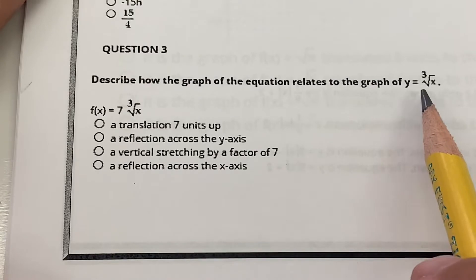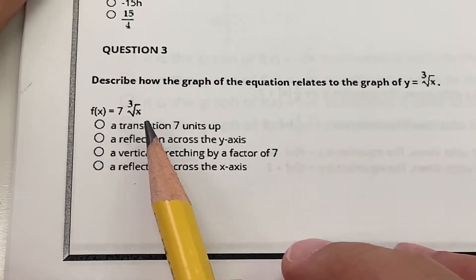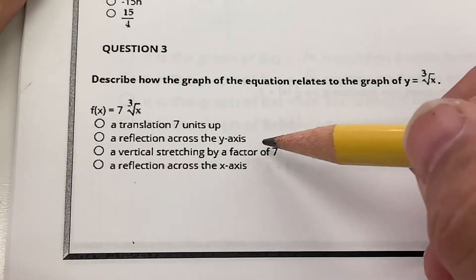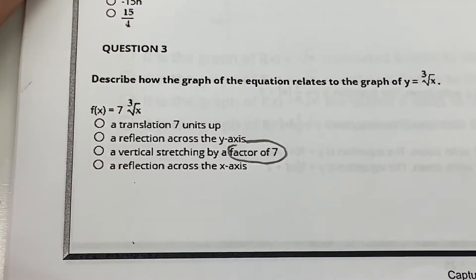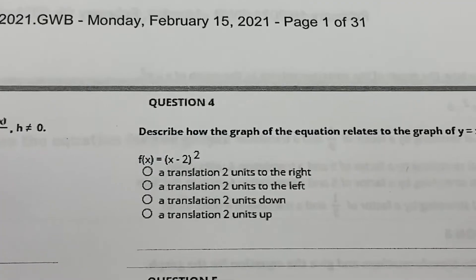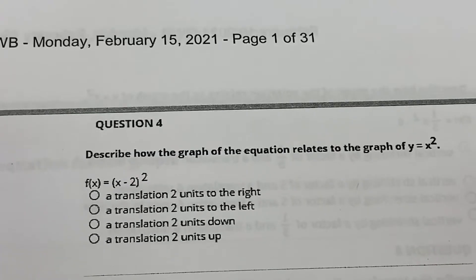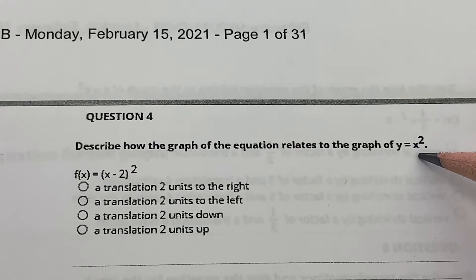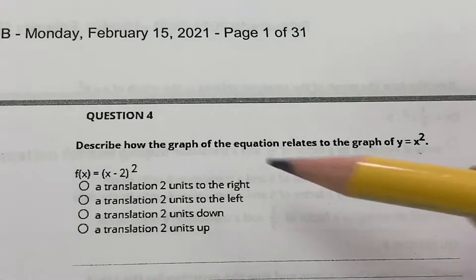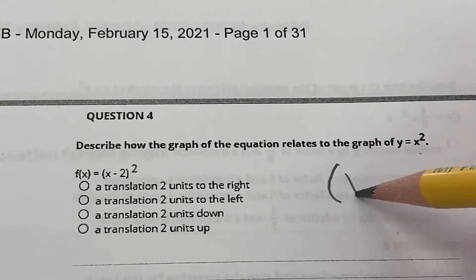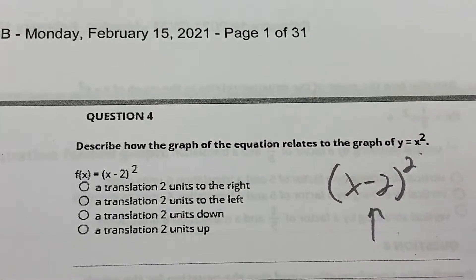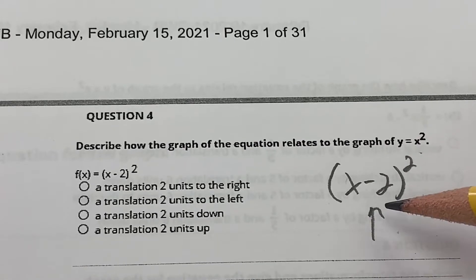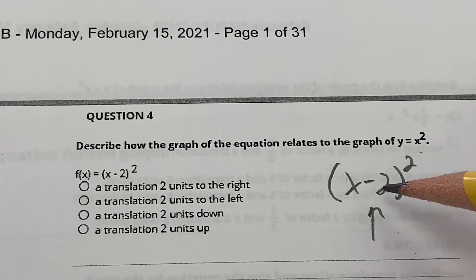They have the cube root graph, and then they have it with a 7 in front of the cube root — that's a vertical stretch by a factor of 7. For the x² graph with (x − 2)², whatever's inside is opposite of your intuition left and right, so it actually goes 2 units to the right.